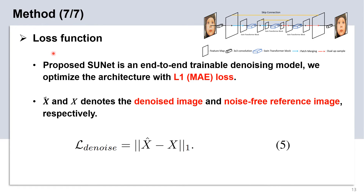As for the loss function, we use mean absolute error, which is called L1 loss, to optimize our model in an end-to-end fashion, as shown in this formula. Where x-hat and x denote the denoised image and noise-free reference image, respectively.